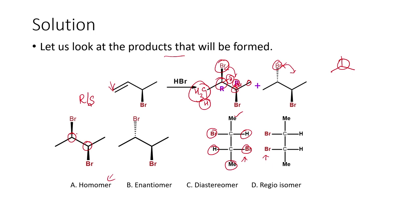We can solve this problem by two methods: using RS nomenclature to find the stereo arrangement, or checking for object mirror image relationship. According to CIP rules, bromine has highest priority. Comparing the two carbon atoms — both have the same atomic number — we go to the next point of difference. The carbon bearing bromine gets the second priority and the other gets the third; hydrogen points away from the observer. Going from 1 to 3 in the clockwise direction gives R configuration for the first carbon. For the second carbon, the same rule applies, also giving R configuration.